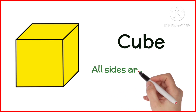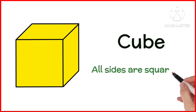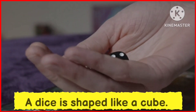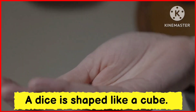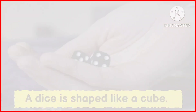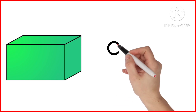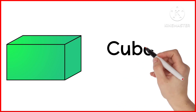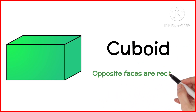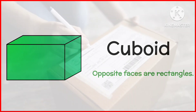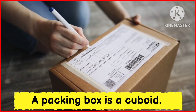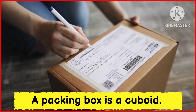Cube. All sides are squares. A dice is shaped like a cube. Cuboid. Opposite faces are rectangles. A packing box is a cuboid.